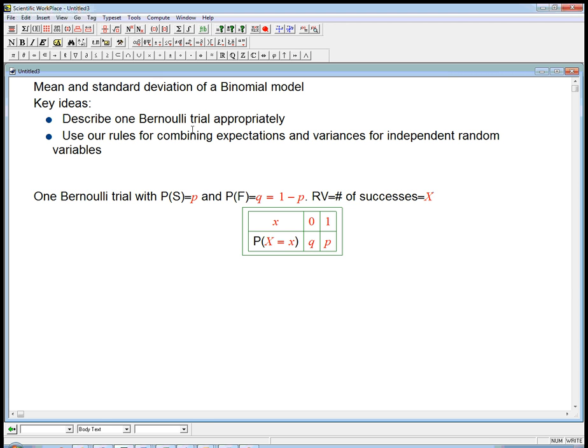Let's really nail down the one Bernoulli trial appropriately. The expected value or mean for just one Bernoulli trial—we should be able to intuit that. If with probability p, I get one success, and otherwise I don't get any success, then on average I should get p successes. Indeed, the expectation value of x is just the weighted sum of these two numbers with these probabilities: q times zero plus p times one, which is p.